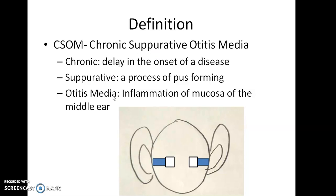This inflammatory result in yellowish fluid is called pus, which is also called suppurative. 'Otitis media' — 'media' refers to something in between. There is an external ear and an internal ear, and in between there is a middle ear. 'Otitis' means inflammation of the ear, so otitis media refers to inflammation of the middle ear. Overall, CSOM is a delayed onset disease of the middle ear involving pus formation and inflammation.